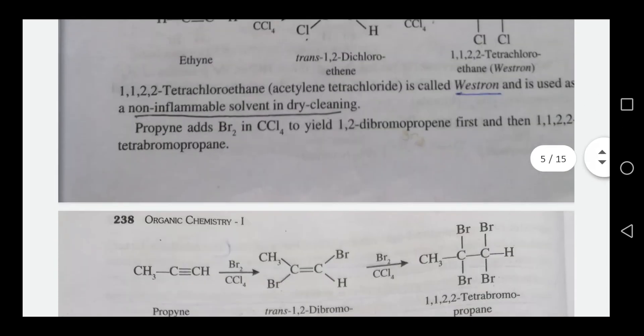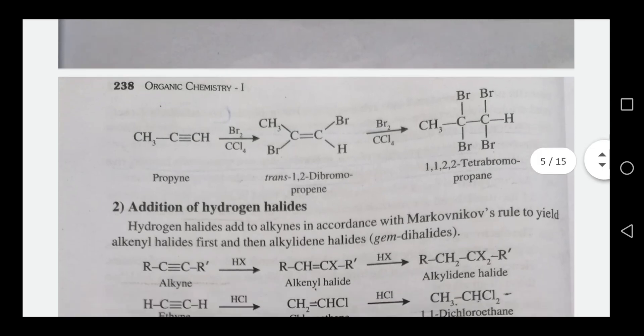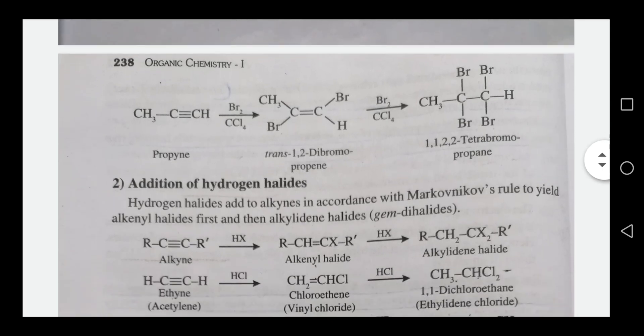The next reaction is the addition of hydrogen halides. HCl is added to the alkyne. The first product is a vinyl halide, and with excess HCl the second product is the geminal dihalide.